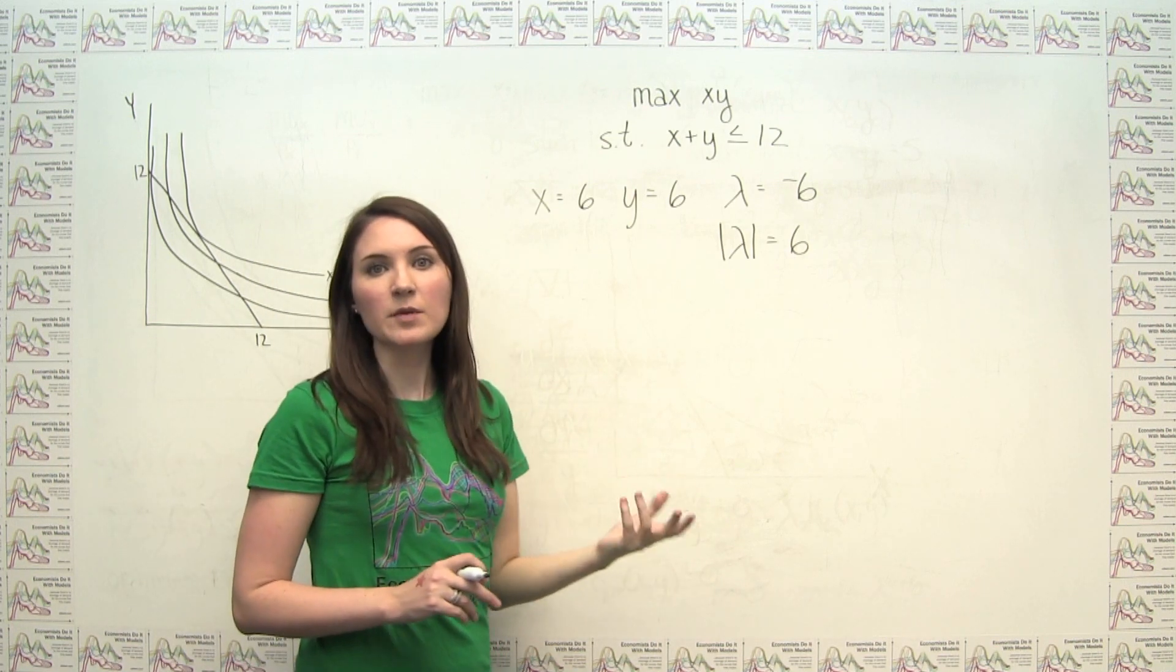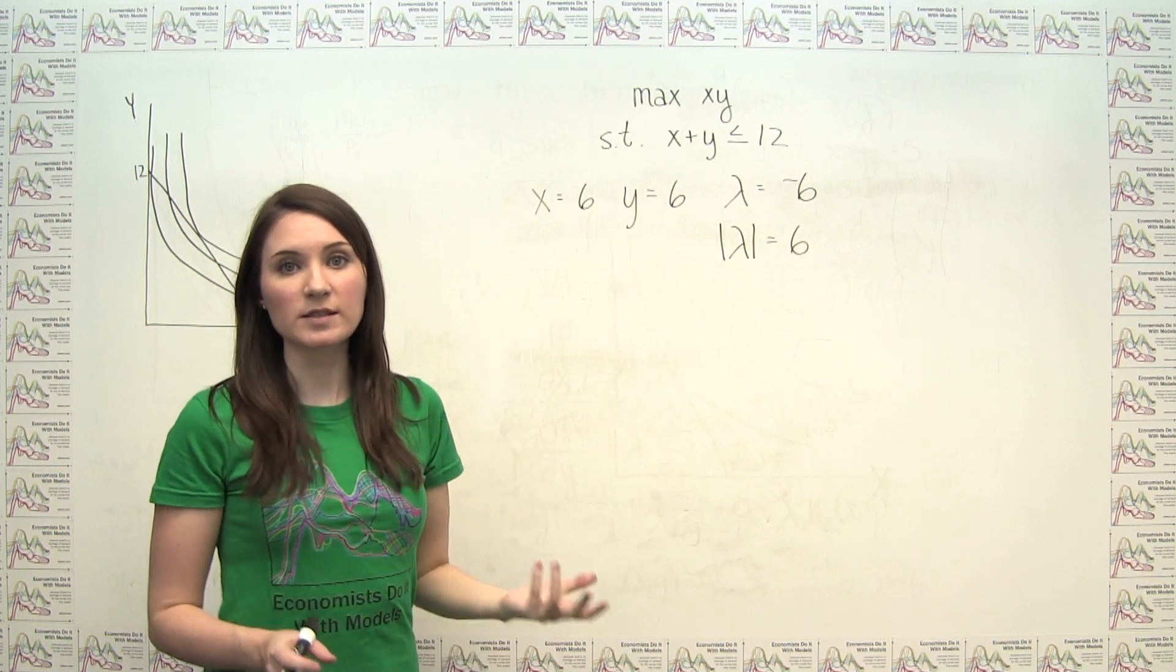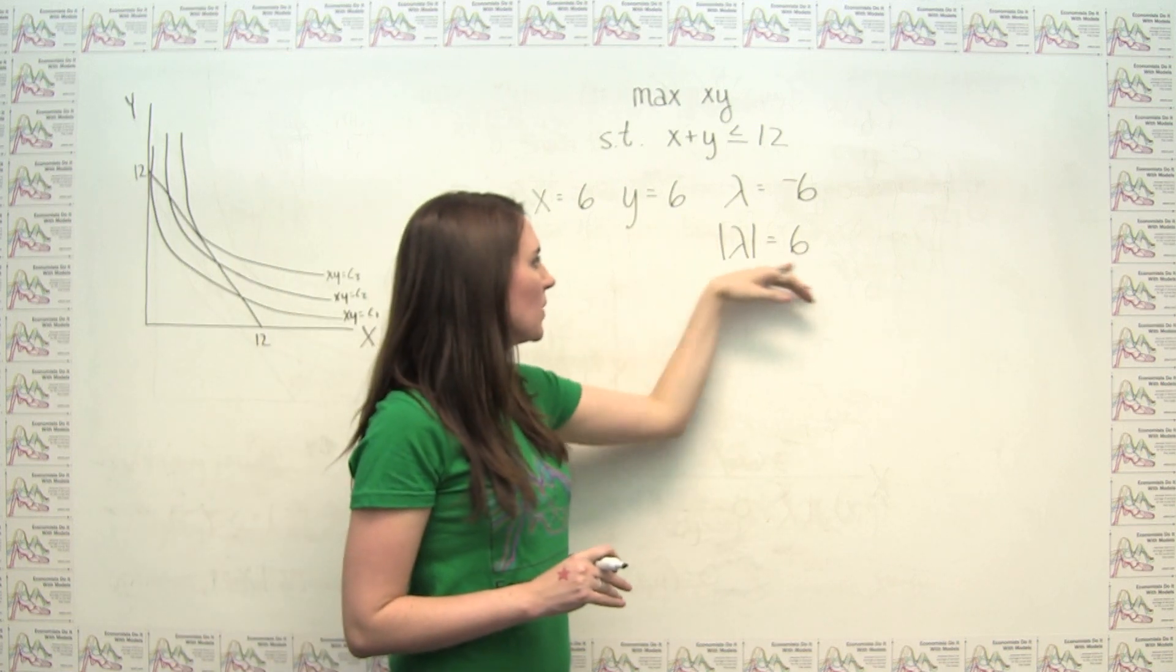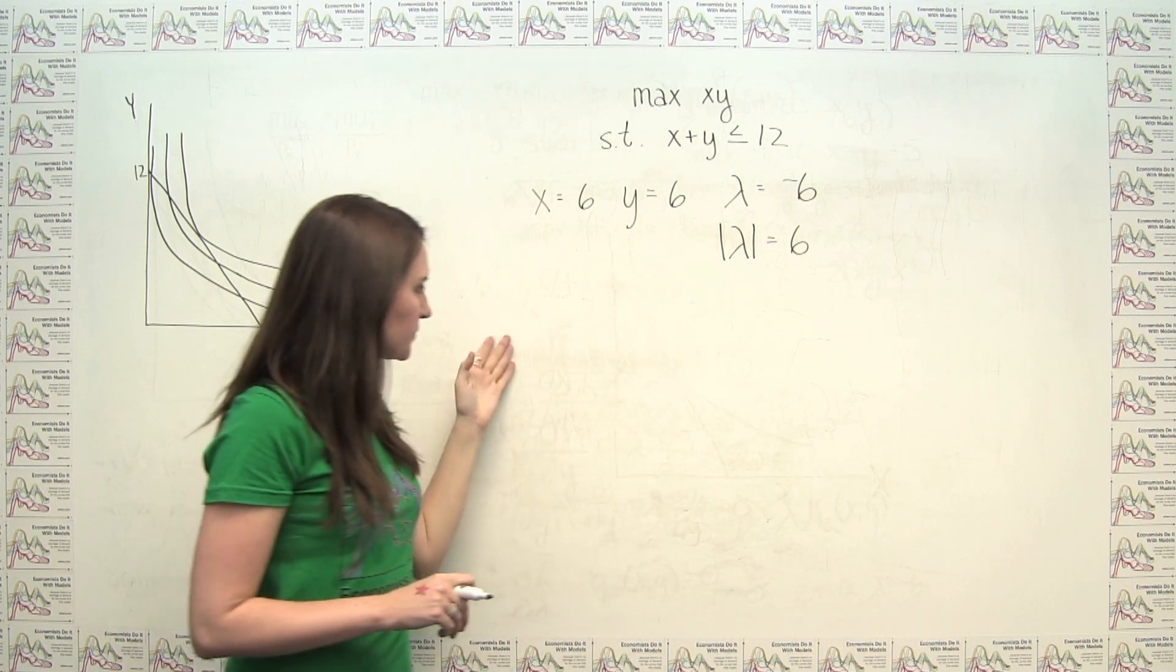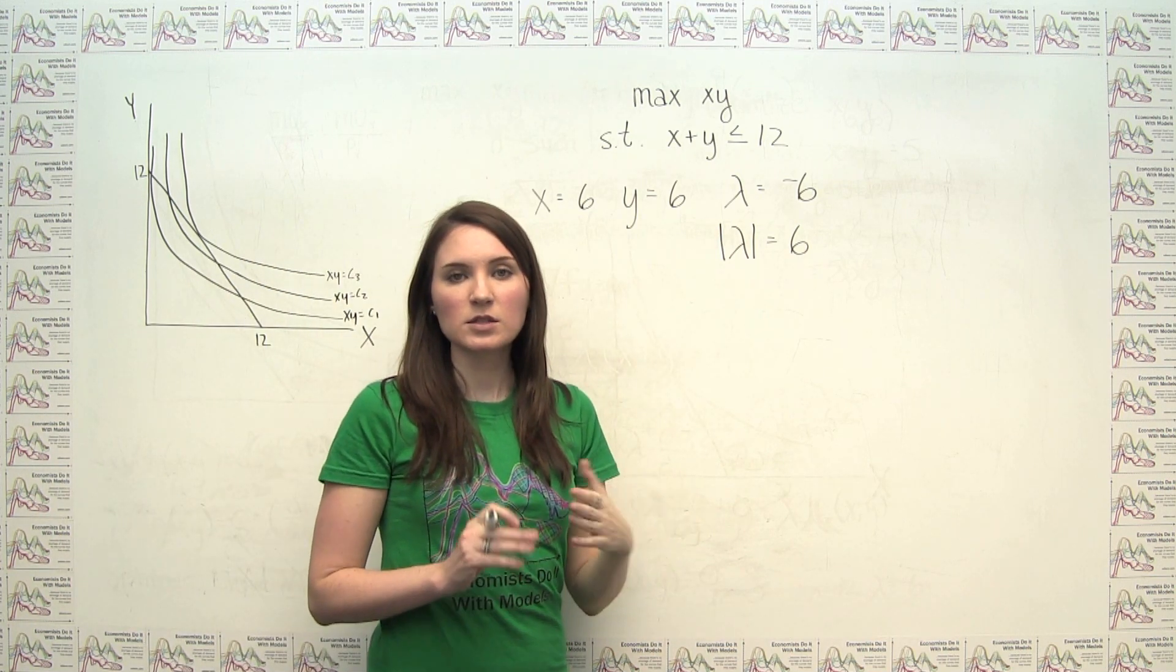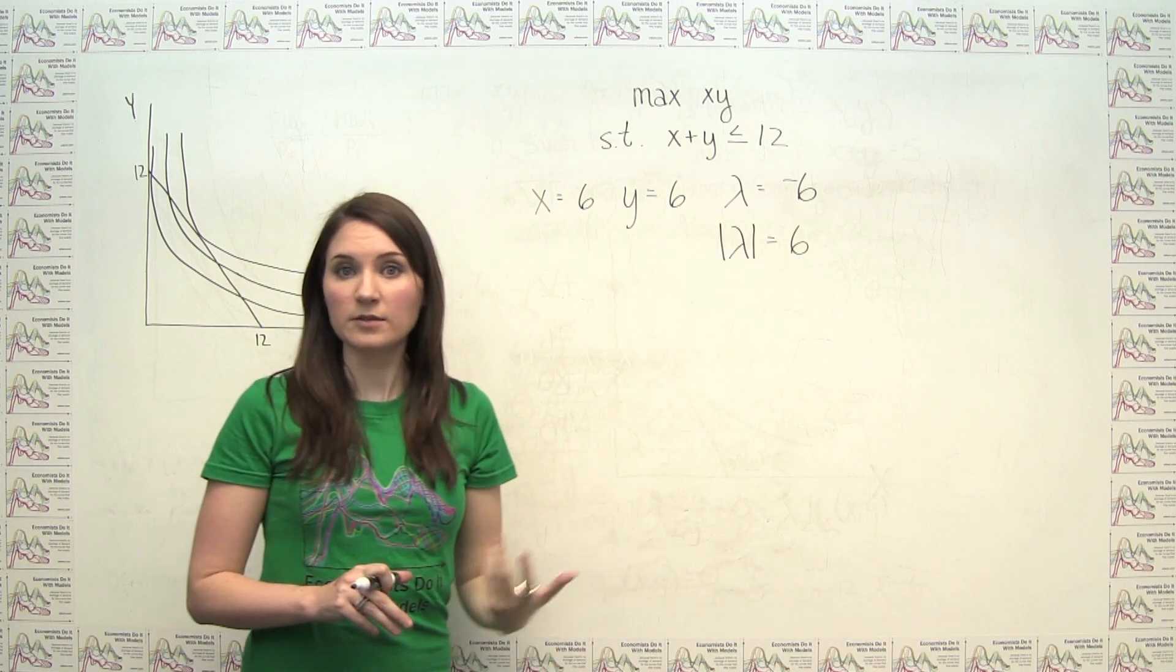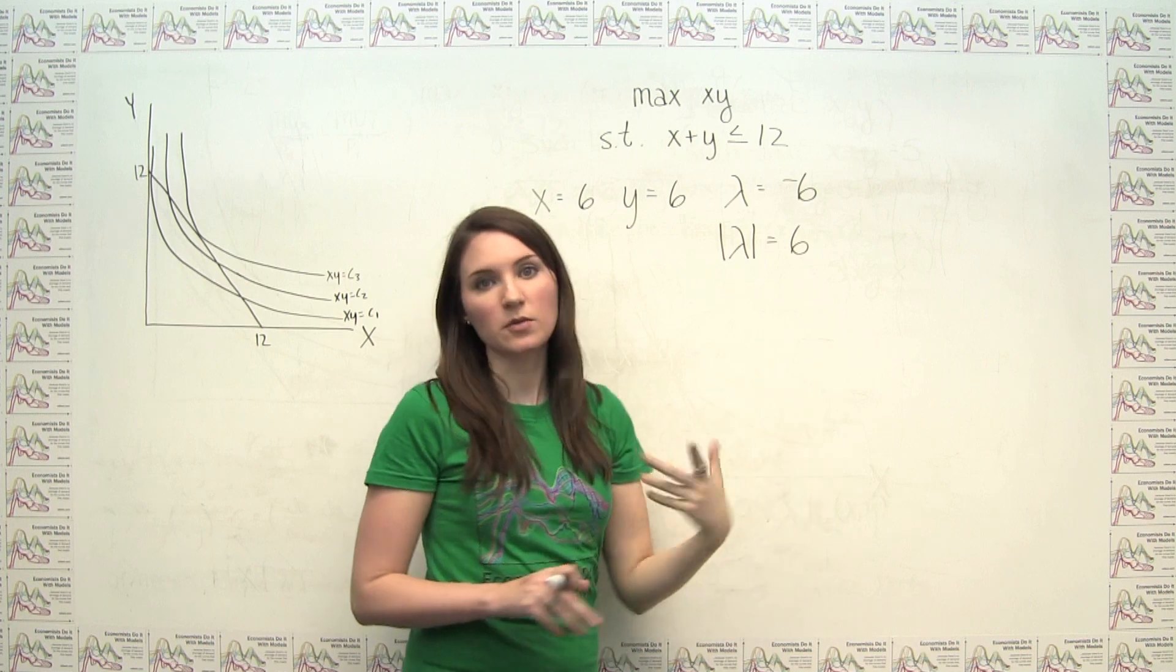So the last thing we want to do from an economic perspective is come back and think about the idea of this lambda or this shadow price that we talked about. The first thing to notice is that because we're talking about lambda as a shadow price, it mostly makes sense to think about the absolute value of lambda rather than the lambda itself. And notice simply that it's the absolute value that's relevant because if we had redefined our Lagrange multiplier to use a minus lambda times the constraint rather than a plus lambda, we would have gotten the same solution for x and y, but we would have gotten a value of positive 6 here rather than negative 6. So it's just an arbitrary distinction that caused us to get this negative value, so it's really the absolute value here that we care about.